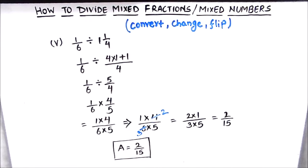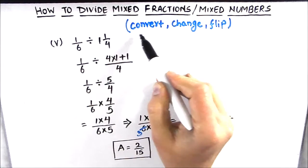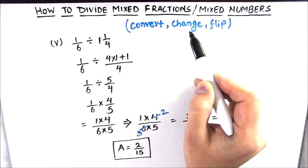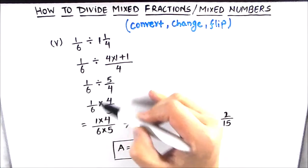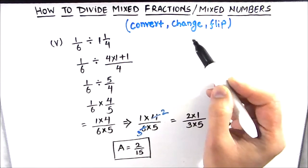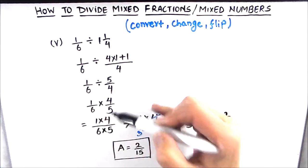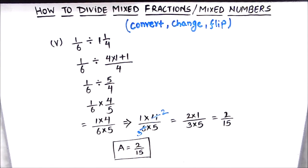Let's take a recap of the steps involved in dividing mixed fractions. First, convert the mixed fraction into an improper fraction. Second, change the division sign into a multiplication sign, and third, flip the other fraction. I hope this video is helpful to you. If you like the video please hit the like button and subscribe to my channel for more math videos. Thanks for watching.